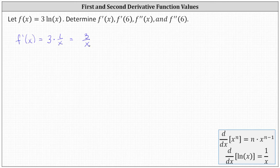Now we can determine the derivative function value f prime of six by substituting six for x in the first derivative function. This gives us three divided by six, which simplifies to one half.